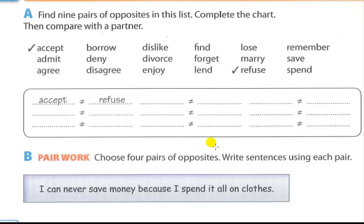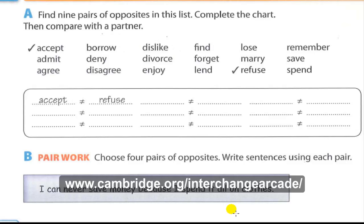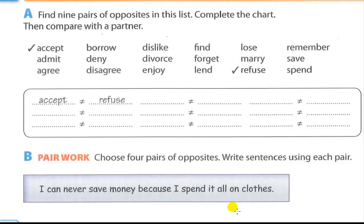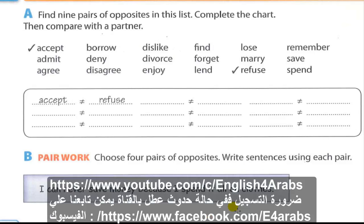That's the end of Unit 15, Part 1. Homework: 1) Keep the words by heart. 2) Listen and repeat. 3) Go to www.cambridge.org/interchange for more practice questions. 4) Answer the first three pages of the Workbook, Unit 15 Part 1. Finally — wish you like it, share it, and subscribe. Shukran, wassalamu alaikum warahmatullahi wabarakatuh.